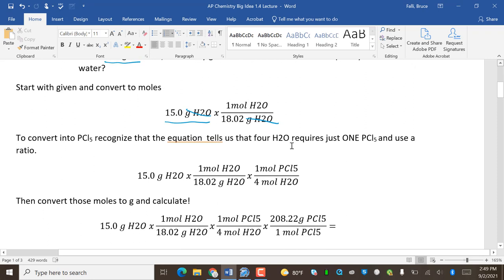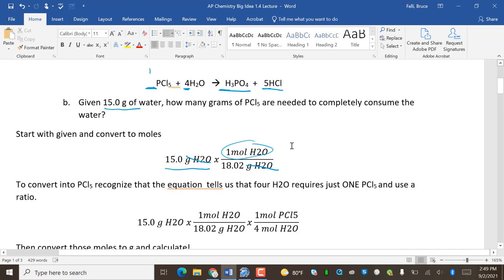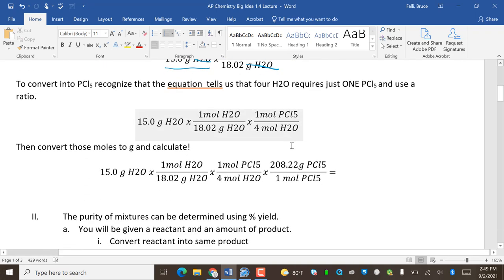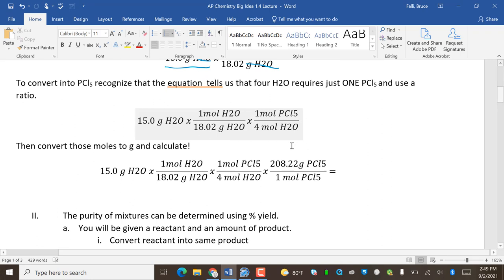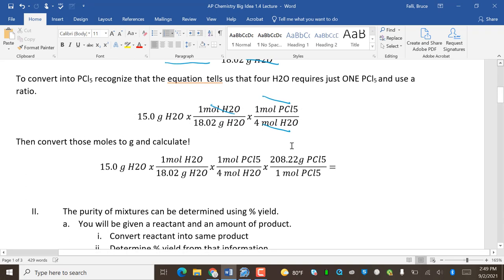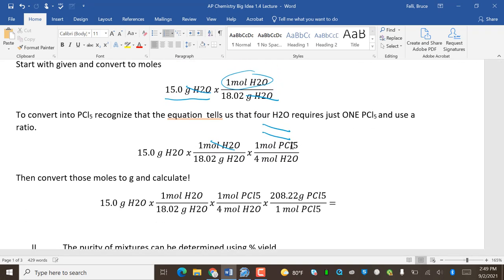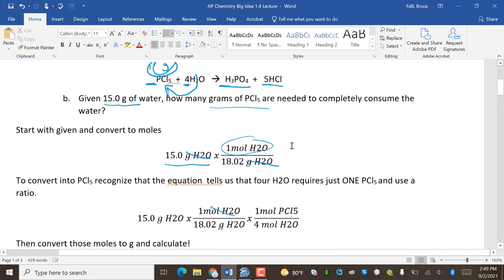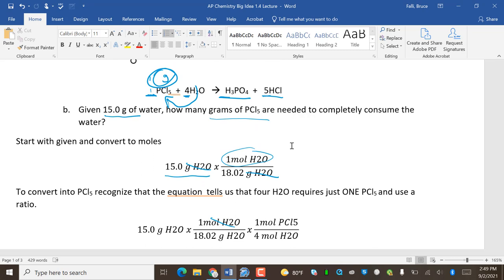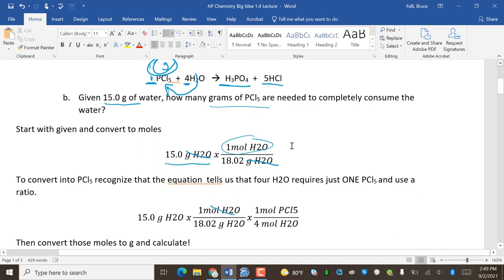This will cancel grams, and now I'm in moles of water. The next step, convert into PCl5. So realize we're in moles of water, and our goal is grams of PCl5. So I'm trying to go from here to here. I'm going to get out of moles of water and go into moles of PCl5.